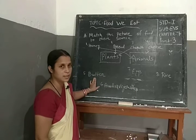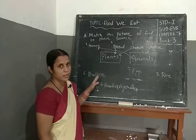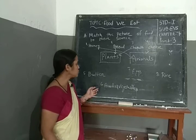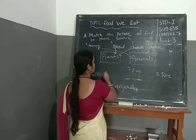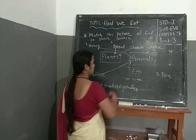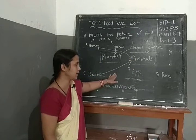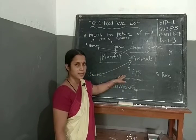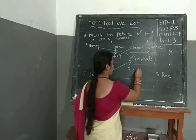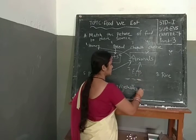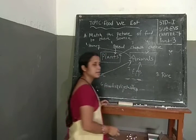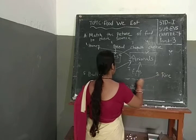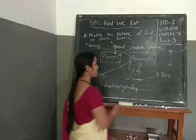Next, butter. We make butter from milk, so butter is also an animal product. Next, egg — eggs are an animal product. Rice is also a plant product.